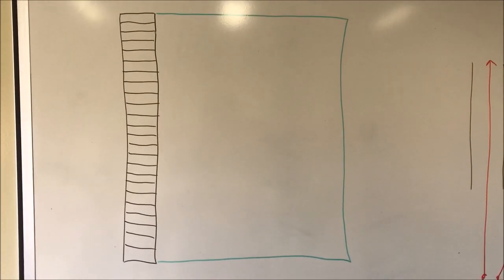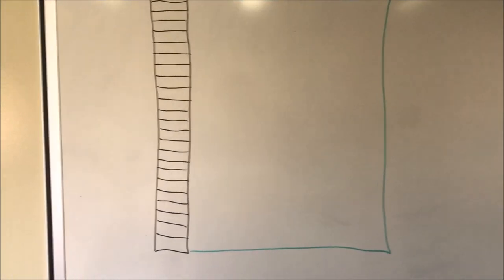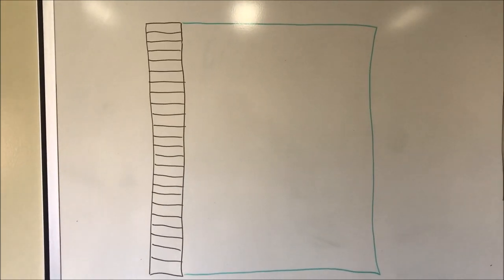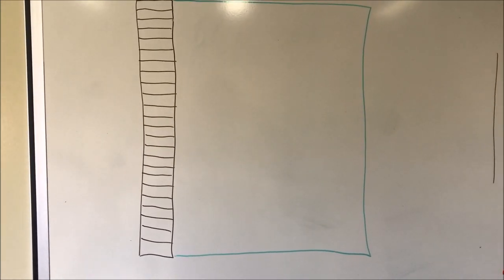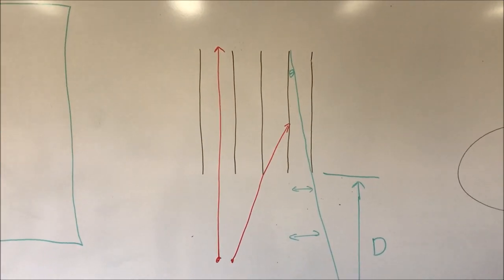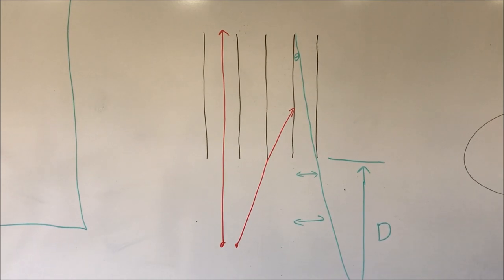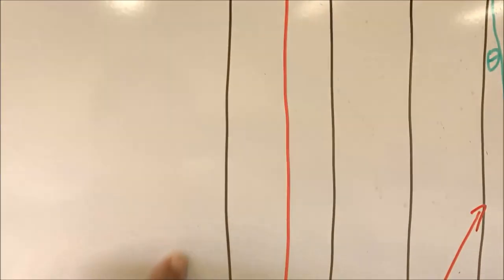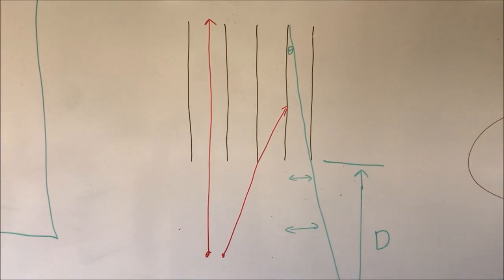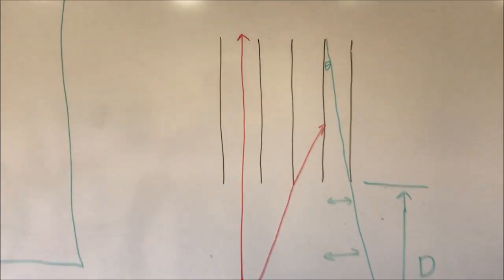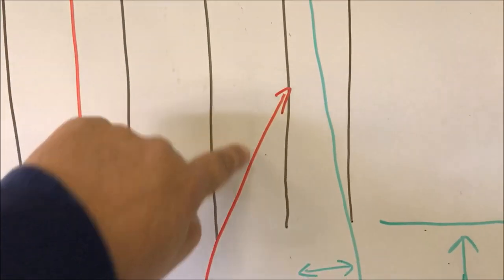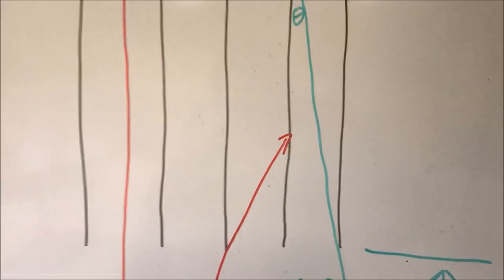We're going to start to build a diagram of the gamma camera horizontally across. You can see we've started to draw in the collimator — this is where the collimator would be on the front end of the detector. The green lines represent the overall detector size. The red lines represent photon emission — if a photon comes in parallel to the septa, it passes through the collimator and will be detected by the crystal. If it comes at an angle, it hits one of the septa and is absorbed by the lead or tungsten.